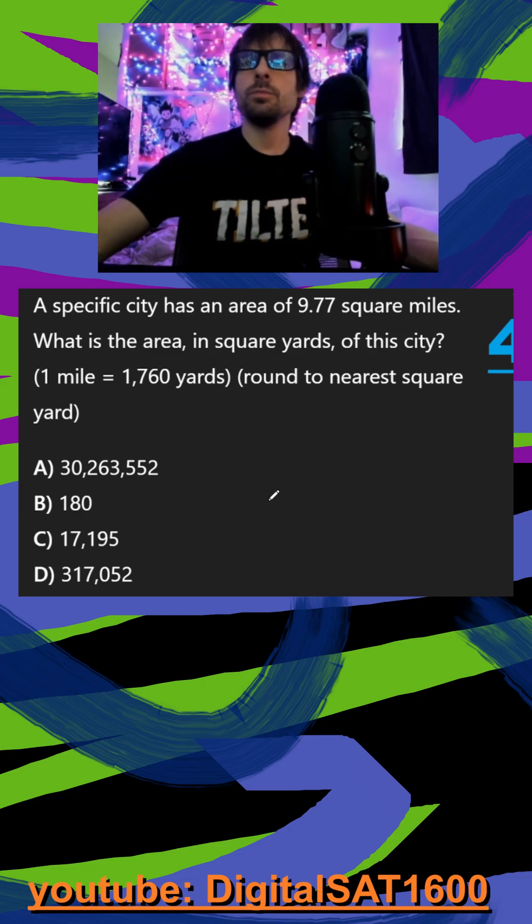So there's definitely multiple ways to do this, but I'm going to go through what I think is the most organized method. We start with our 9.77 miles squared. And I'm going to map it out first, and then we'll talk about it.